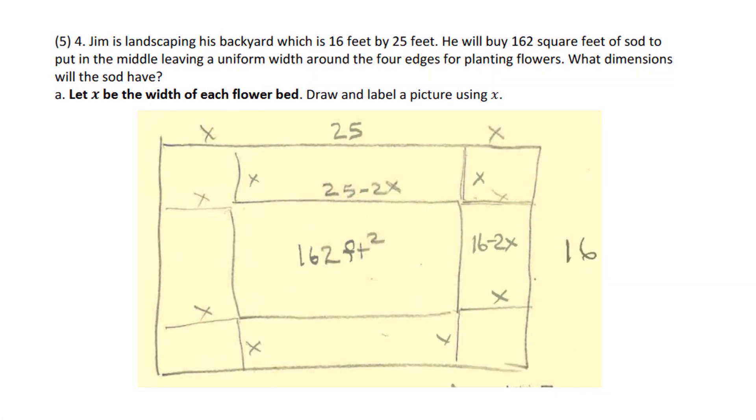I will check it out. Finally, the last problem, number 4, is worth 5 points. So, somebody's landscaping a backyard, which is 16x25, he buys 162 feet of sod to put in the middle, leaving a uniform width around the 4 edges for planting flowers. What dimensions will the sod have?